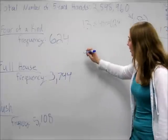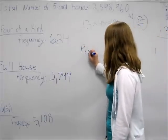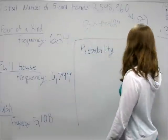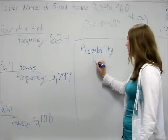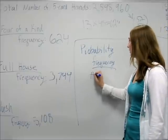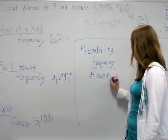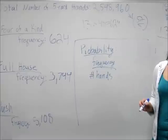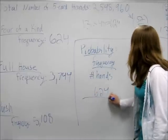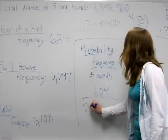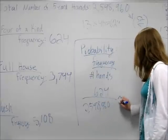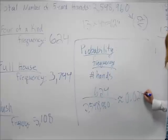Now we take these two numbers and figure out the probability. The probability will be the frequency over the total number of hands. For the case of a four-of-a-kind, the probability will be 624 divided by 2,598,960, which is approximately 0.024%.